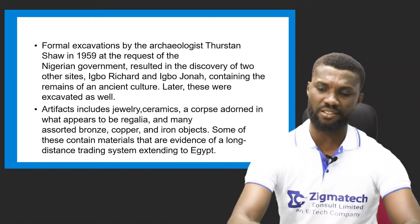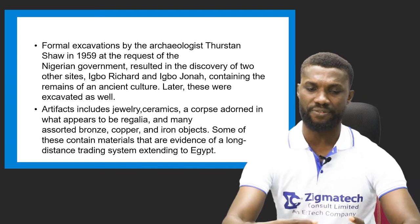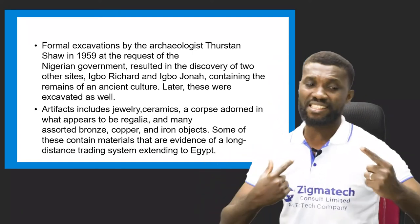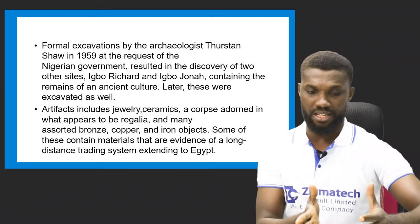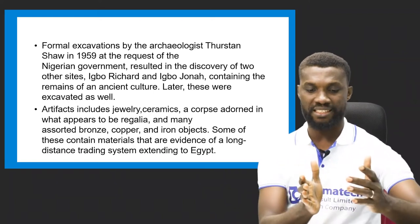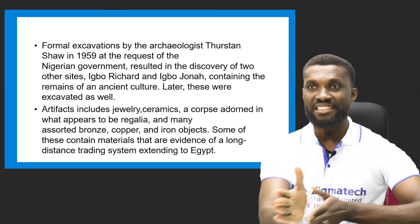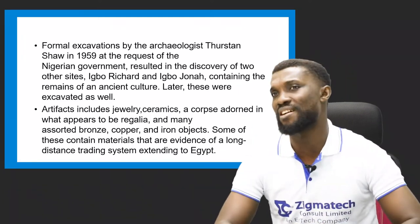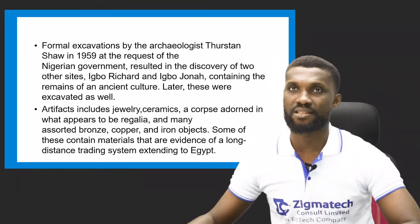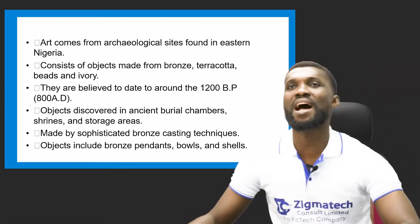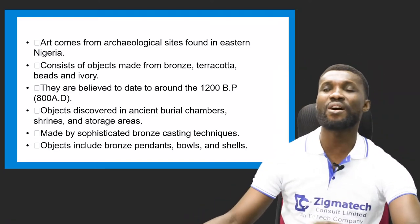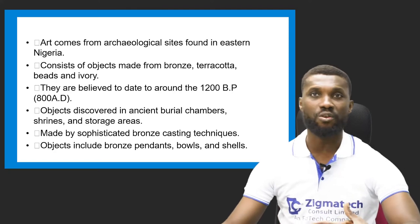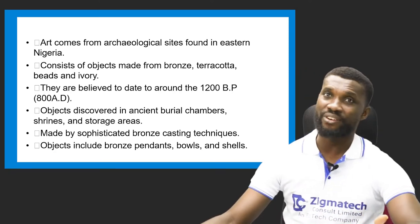If you trace some of these artifacts, you can trace them back toward Egypt. This simply means that the people of Igbo-Ukwu had a relationship with the Egyptians — they did business that far, even before the arrival of the colonial masters. The art came from archaeological sites found in eastern Nigeria and consists of objects made from bones, terracotta, beads, and ivory, believed to date from around 1200 BC to 800 AD.